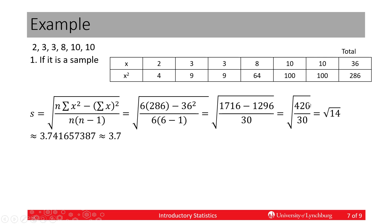We take the square root of 14 and we get this large number. We're going to use something called the roundoff rule. The roundoff rule says that every calculation we make, we use one more decimal place than we had in the data.